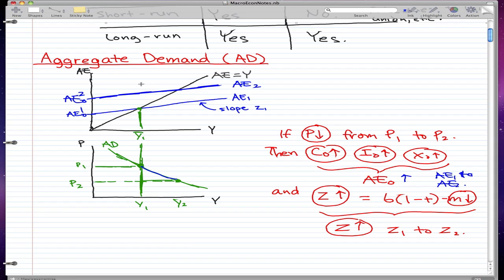This slope would be slope Z2 because our marginal propensity to spend actually increased from Z1 to Z2. Now all this kind of makes sense if we think about it logically.